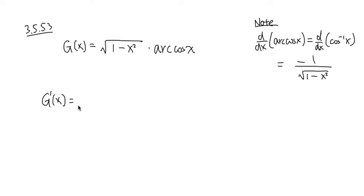We take the first function, which is square root of 1 minus x squared, times the derivative of the second. The derivative of arccos x is negative 1 over square root of 1 minus x squared. When the inside is just x, this is it.